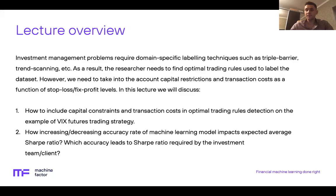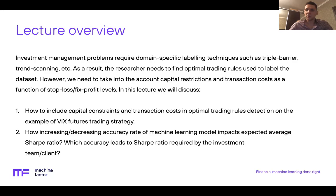Let's start with a short lecture overview. Investment management problems require domain-specific labeling techniques such as triple barrier or trend scanning. As a result, the researcher needs to find optimal trading rules used to label the dataset, because for example, the triple barrier algorithm needs stop loss and fixed profit levels as parameters, and trend scanning labeling needs a look-forward window as a parameter. We need to take into account not only the returns of signals generated under these labels, but also capital restrictions and transaction costs as a function of stop loss and fixed profit levels.